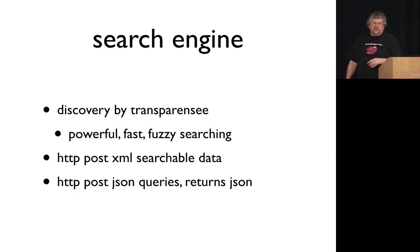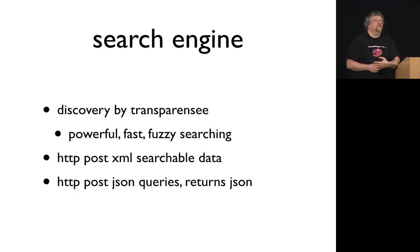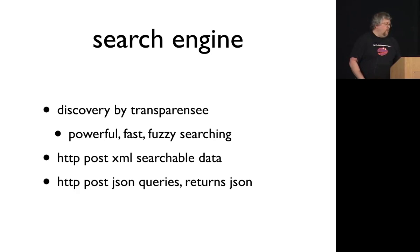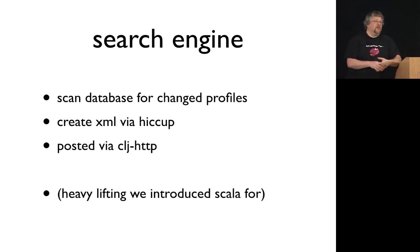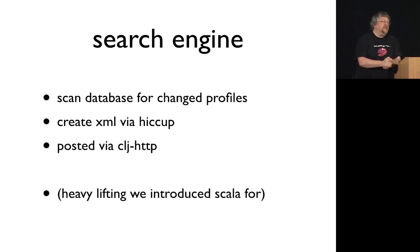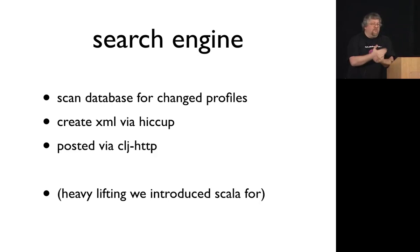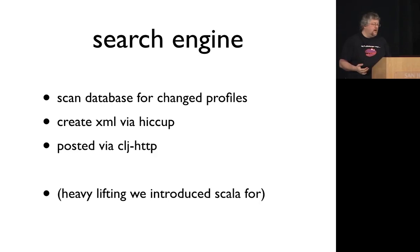The search engine we use is called Autonomy Discovery, and it's really good for fuzzy searching. All data goes in via XML, but now they have nice JSON queries. We decided to write the publishing process — the code that scans the database, goes through the business rules, creates the XML, and posts it to the search engine — in Clojure. This replaced about a thousand lines of Scala. The Scala process was actor-based, had memory leaks, tended to fall over, and we'd gone through the painful 2.7-to-2.8 upgrade. The Clojure replacement turned out to be relatively simple.